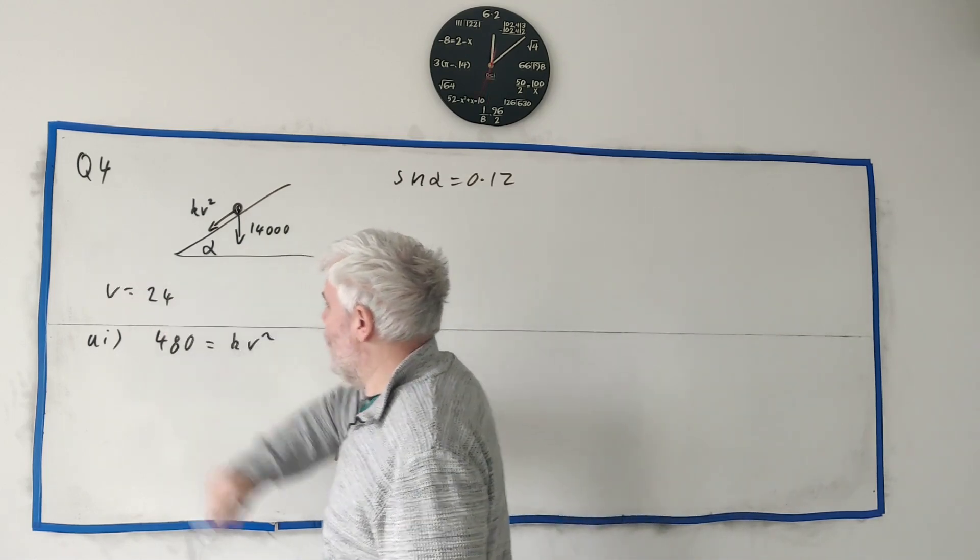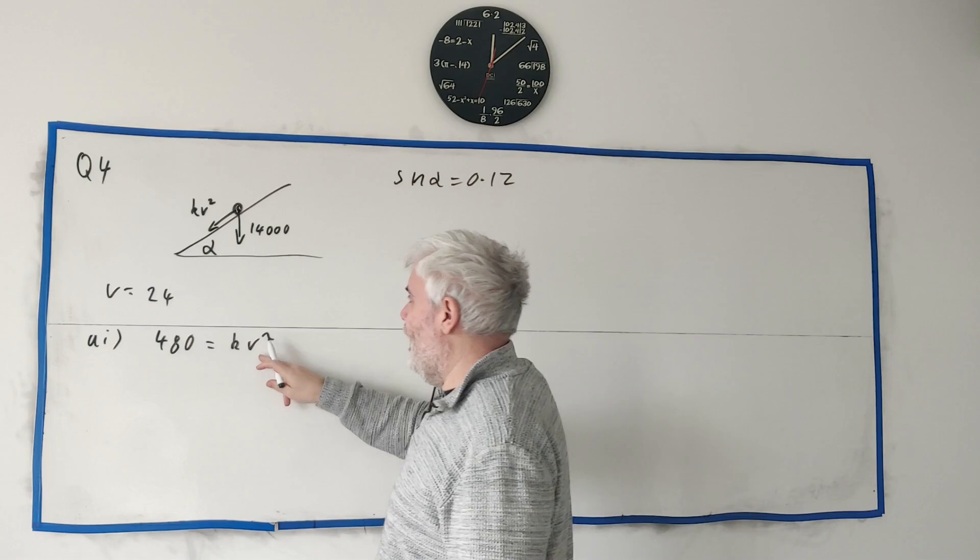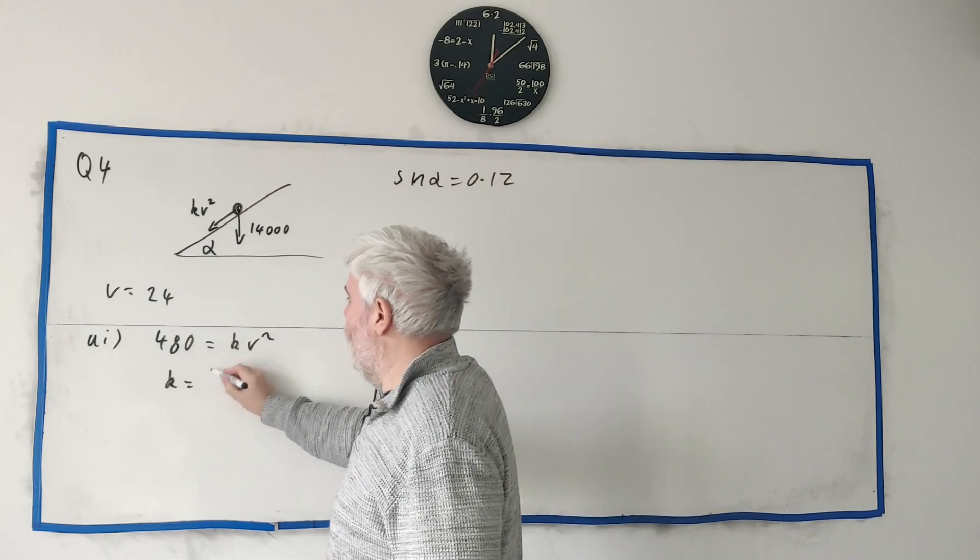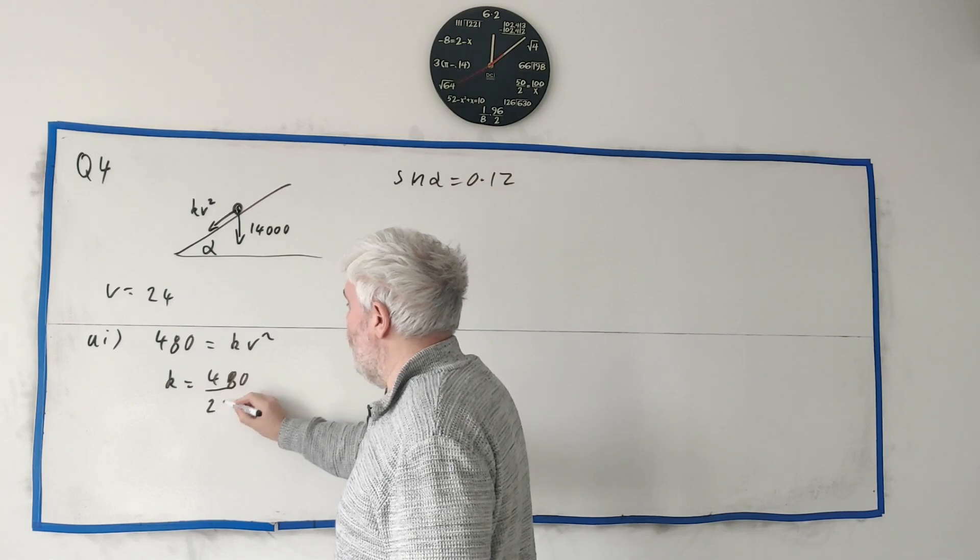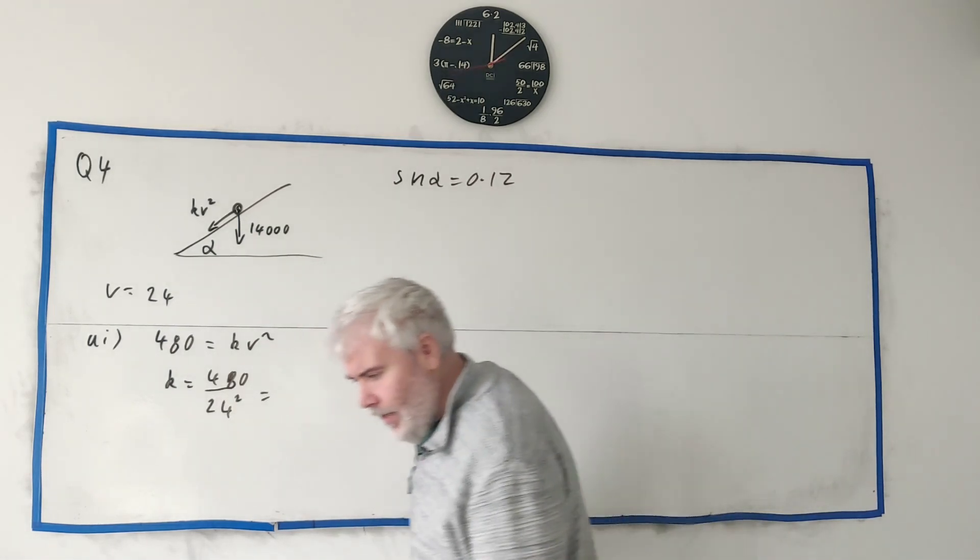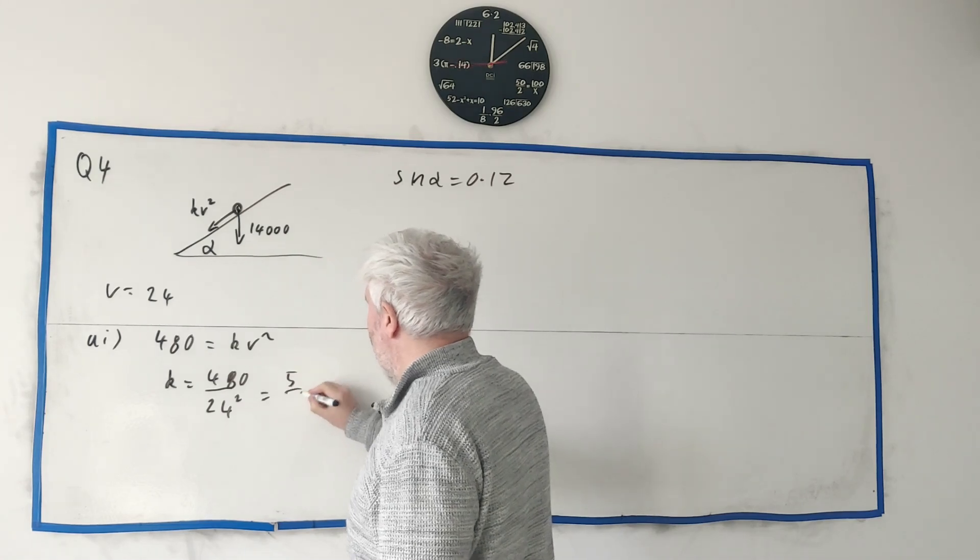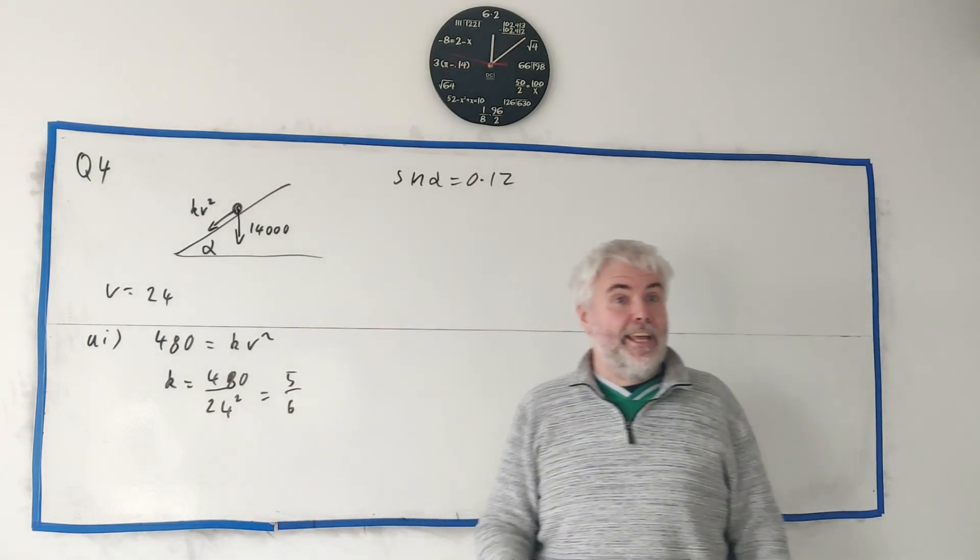They also told us V was here. So really, it's just K equals 480 over 24 squared. Put that into a calculator and I believe it's, yeah, there it is. 5 over 6 is the answer for K.